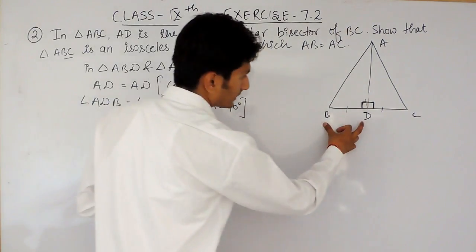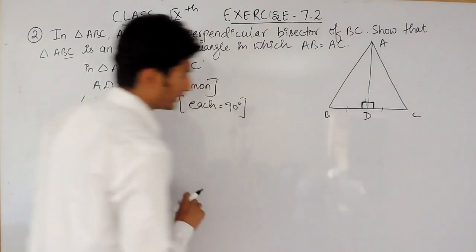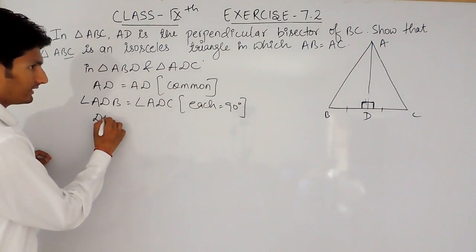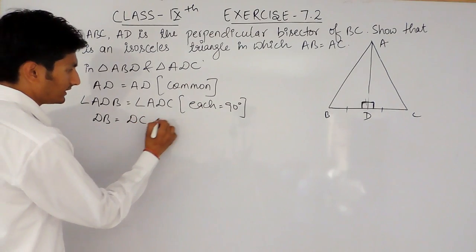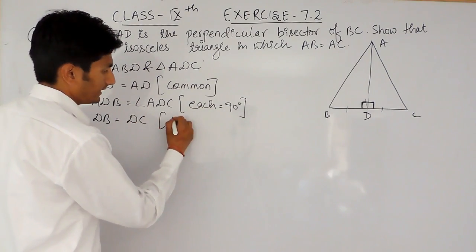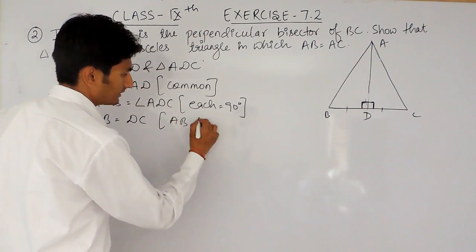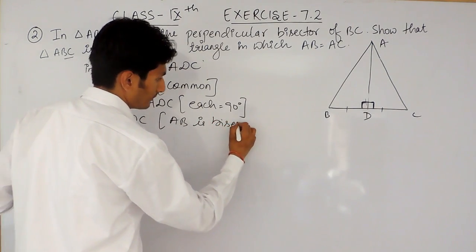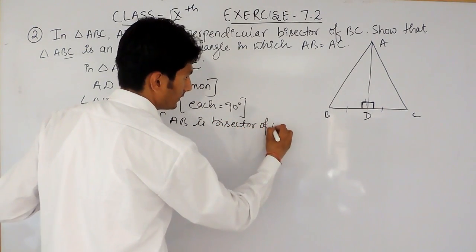And this and this side is also equal. That is, DB must be equal to DC. This is because AD is bisector of BC.